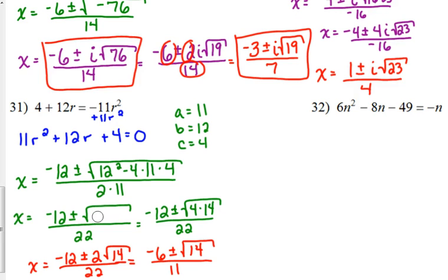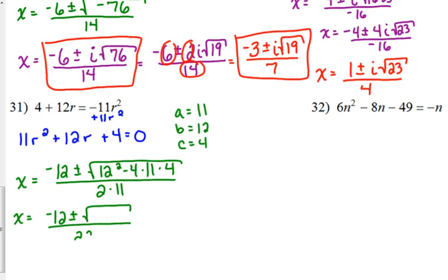My bad. Not perfect. Never claimed to be. Okay, 32 is divisible by 16. Take out the i. 16 times 2. So that's 4i square root of 2.